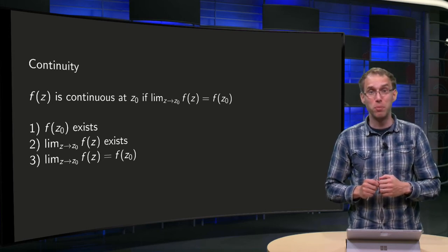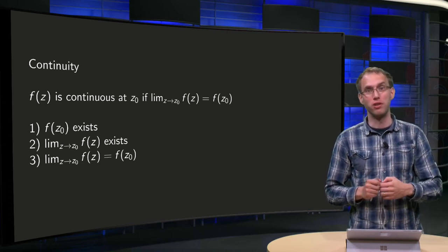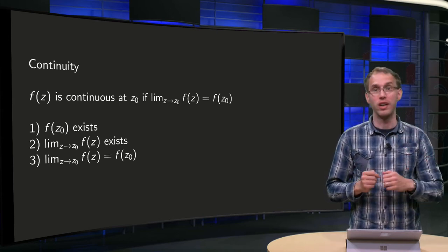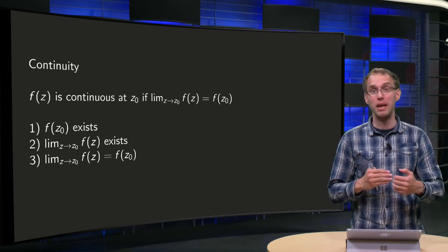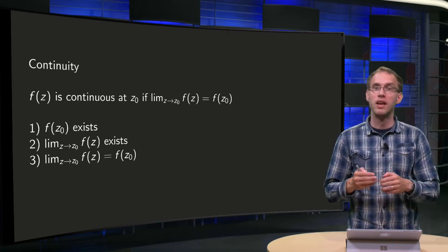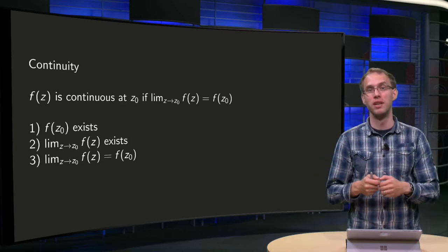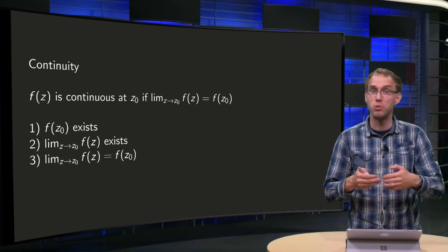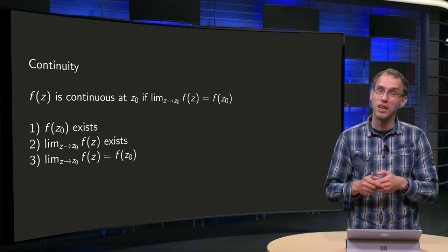Continuity of functions of a real variable is defined in terms of limits. Continuity of complex functions is defined similarly. We saw earlier that the limit of a complex function f exists if and only if the limits of both u and v exist, its real and imaginary parts. This property of limits transfers directly to the continuity property, which means that continuity of a complex function boils down to continuity of its real and imaginary components.